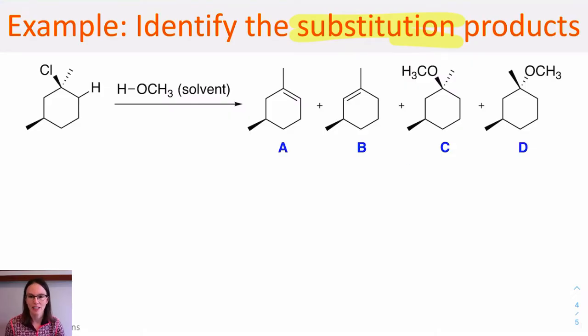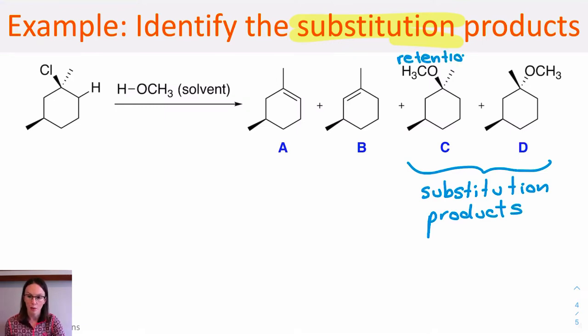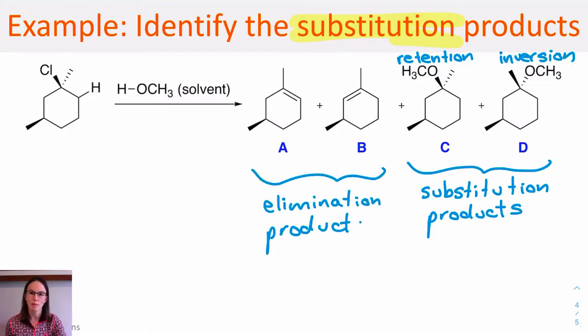Here in this example, I ask you to identify the substitution products for the reaction. So in this case, both C and D are correct possible answers. So C represents a retention of configuration from the starting materials, and D represents an inversion of configuration from the starting materials.